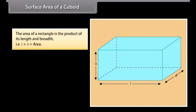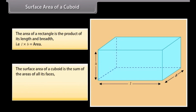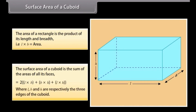We already know that the area of a rectangle is the product of its length and breadth, that is L × B = area. Therefore, the surface area of a cuboid is the sum of the areas of all its faces, which is equal to 2(lb + bh + lh), where L, B, and H are respectively the three edges of the cuboid.